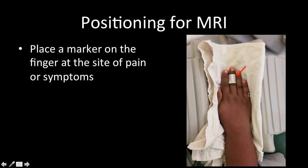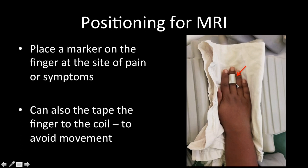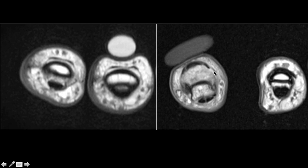The hand should be placed in the prone position with the palm facing downwards on the coil. Make a point to place a marker at the site of pain or symptom in the patient — place the marker superficially and do not press it down. If the patient is making movements, you can tape the finger. The wrong method is pressing the marker down onto the skin, as this deforms the underlying structures and causes you to miss injuries. Please inform your staff to place the marker superficially, or one centimeter proximal to the site of pain, so you don't compress underlying structures.